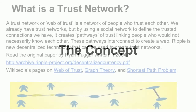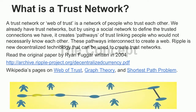This is a technique to create a LETS system — a local exchange trading network — without having a central point of control. It's a peer-to-peer system. A trust network, or web of trust, is a network of people who trust each other. We already have trust networks in our real lives. By using a social network to define the trust connections we have, it creates pathways of trust linking people who would not necessarily know each other. These pathways interconnect to create a web. Ripple is new decentralized technology that can be used to create trust networks, using graph theory and shortest path problem to route payments through the network.